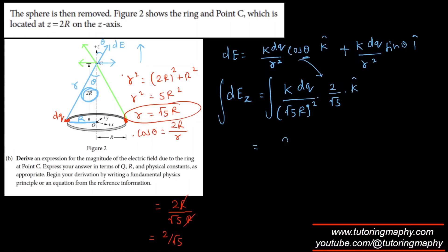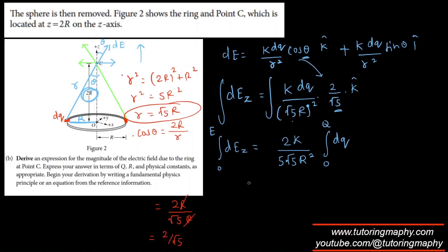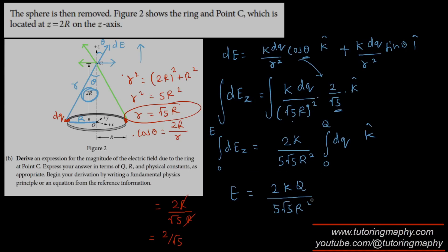Pulling all constants out of the integral: 2K/(5√5·R²) times ∫dQ from 0 to Q, which simply gives Q. Therefore the final expression for the magnitude of the electric field at point C is: E = 2KQ/(5√5·R²).